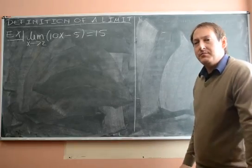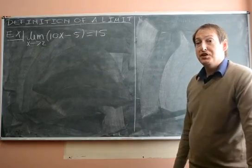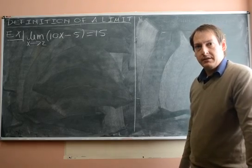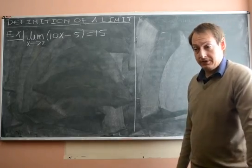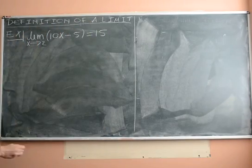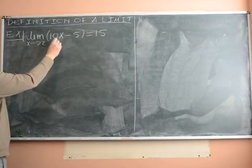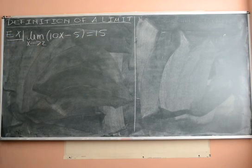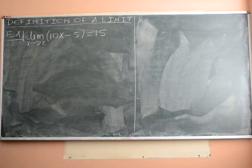So let's now look at an example where we use the definition of a limit to prove that a given limit has a given value. In this example we'll prove that the limit of 10x minus 5 as x tends to 2 equals 15, and we'll do this by using the definition.